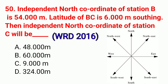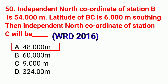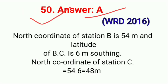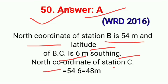Question No. 50. Independent north coordinate of station B is 54 m. Latitude of BC is 6 m south. Then independent north coordinate of station C will be — correct option A: 48 m. North coordinate of C = 54 − 6 = 48 m. Correct option A.